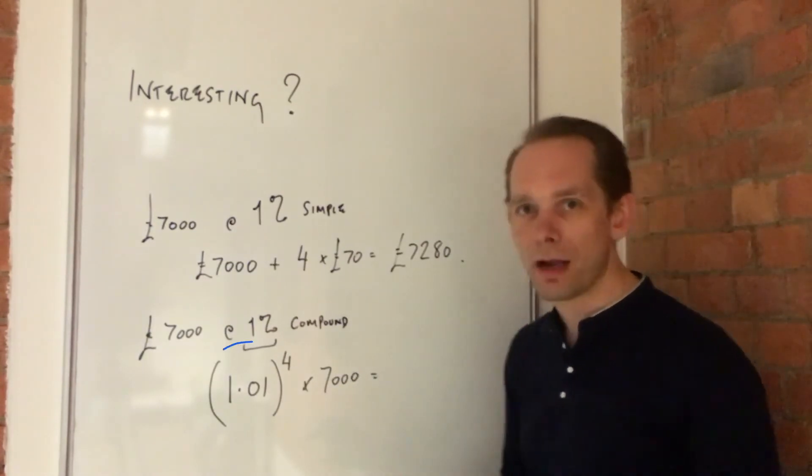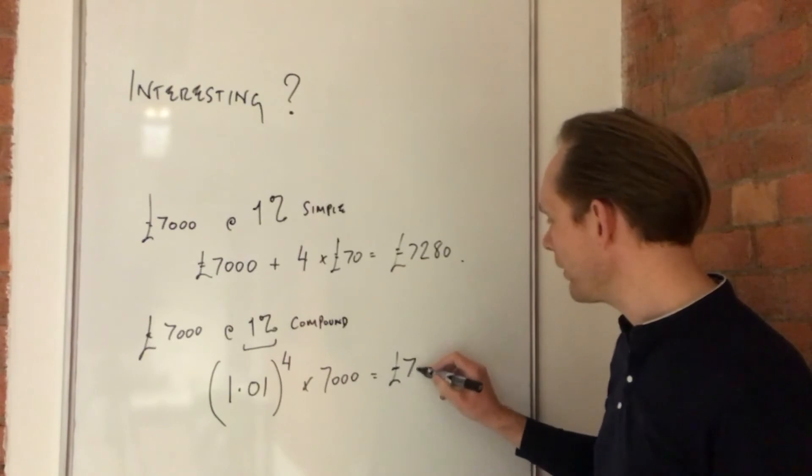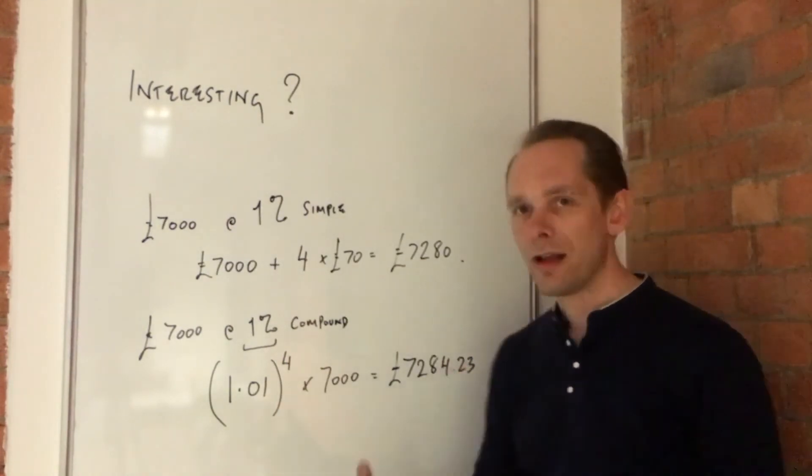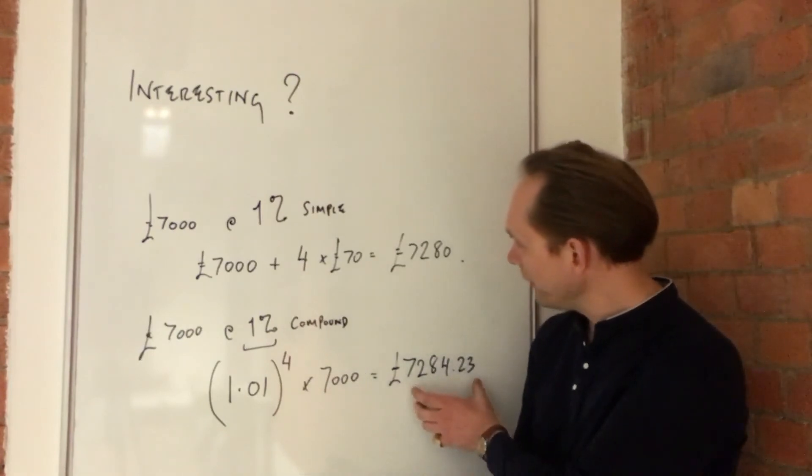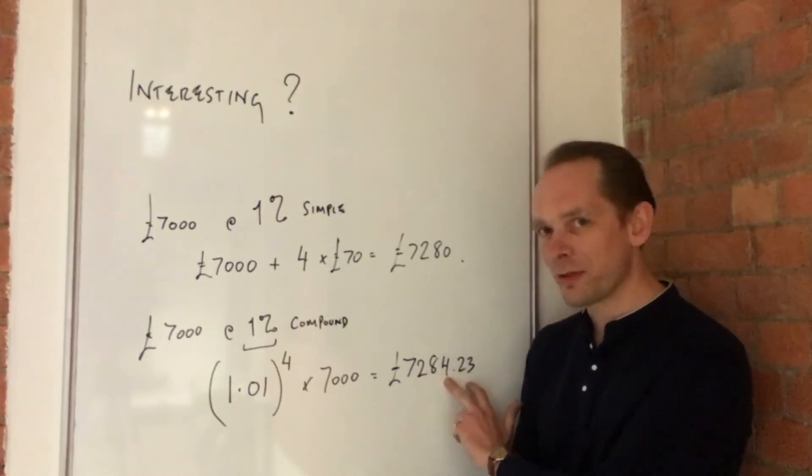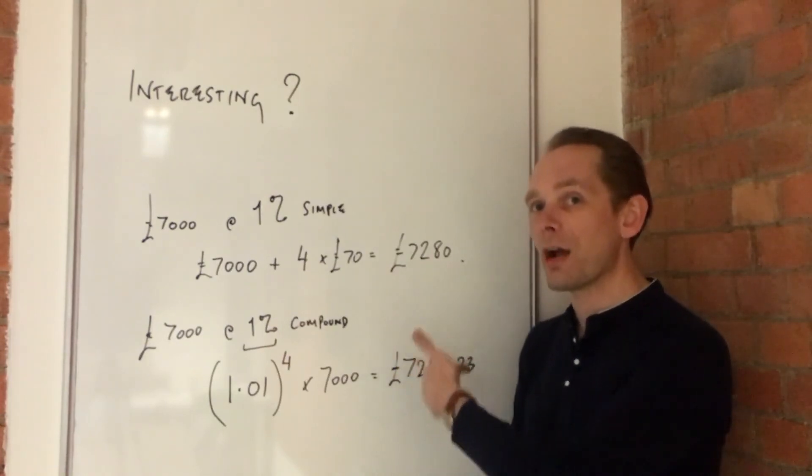you'll get the true amount, which is something like £7,284.23, which is a little bit more than the simple interest. That extra £4.23 is what's come from this compounding effect of the interest.